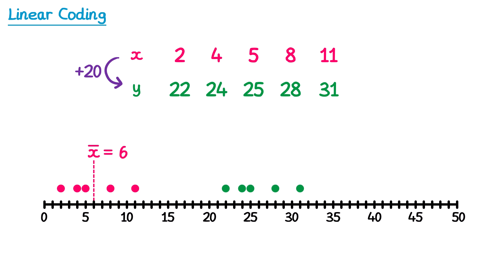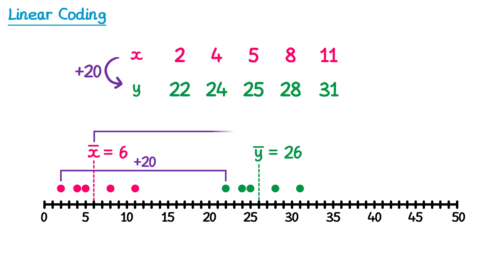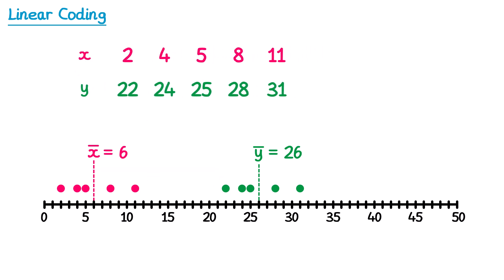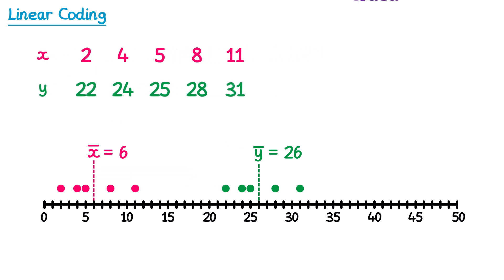We can also mark on the mean of the y values, y bar, which is 26. To get each of the y values we added 20 to all of the x values. Notice how to get the new mean y bar, we add 20 to the old mean x bar. When we create this new set of data we say the original data has been coded. We coded it using the formula y equals x plus 20. Notice how the new mean y bar is equal to the old mean x bar plus 20, and this is always going to be the case if you code like this.